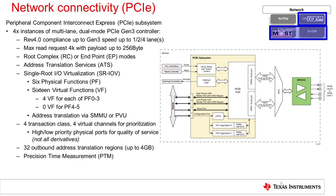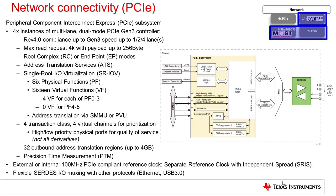Implementation of multiple transaction classes in virtual functions allows for prioritization of traffic. Flexible reference clock options allow use of external source references with optional spread spectrum control, or to generate the reference internally and provide it to the external link partner. Internal clock generation can reduce system cost by eliminating the need for an external reference.